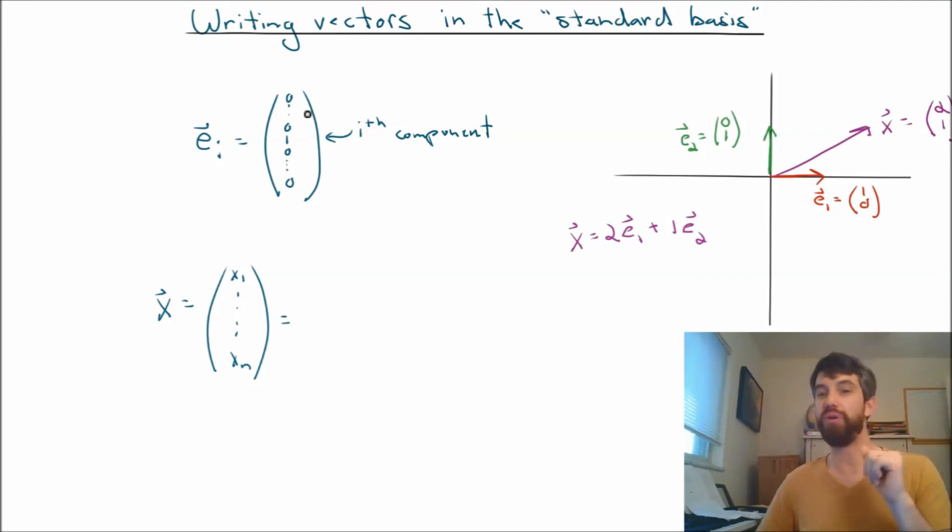All the others have a zero in the first component. So if I want to match up this x1, the only vector that has anything in that first component is e1, and it only has a 1 there. So what I'm saying is, it must have a scalar of x1 in the e1 direction.